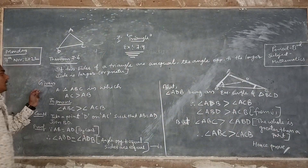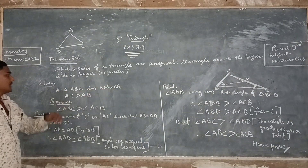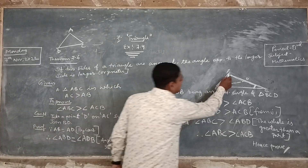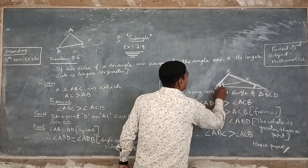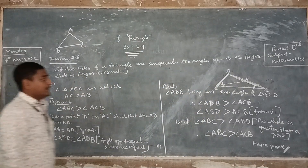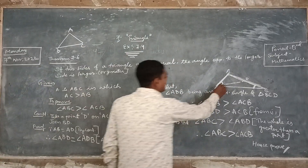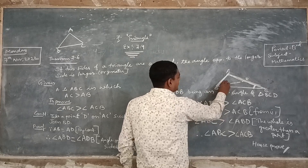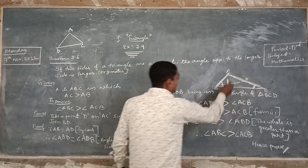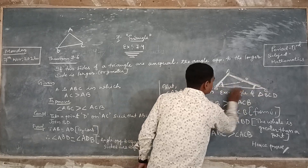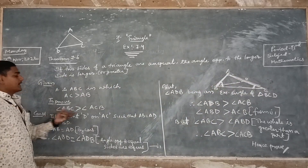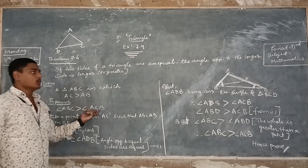What we have given: In triangle ABC, AC is greater than side AB. To prove: angle ABC is greater than angle ACB.